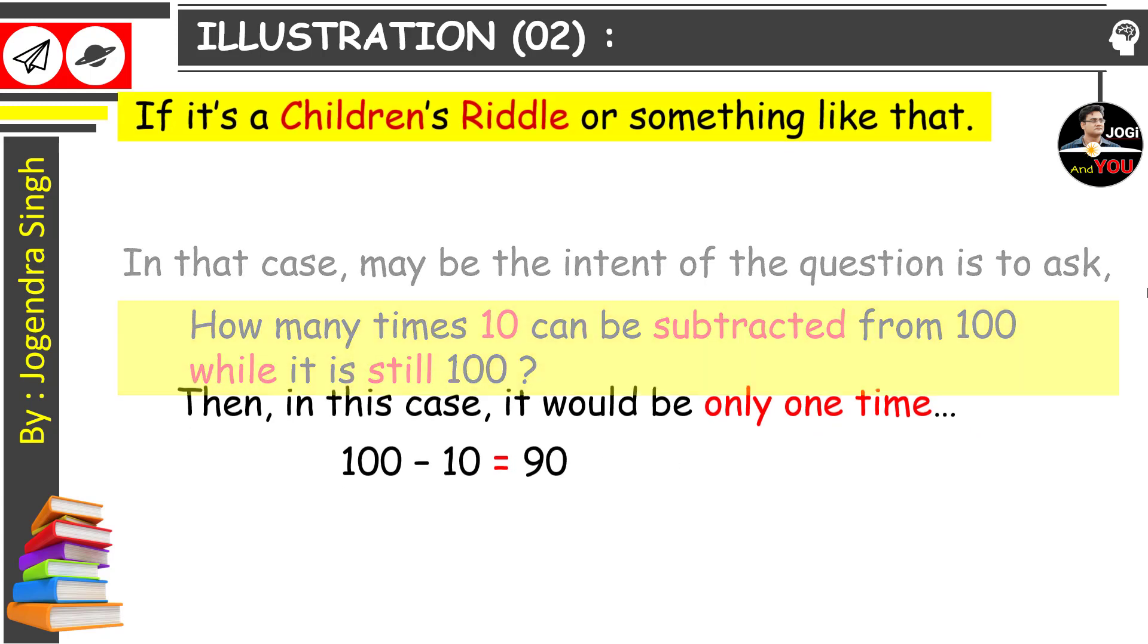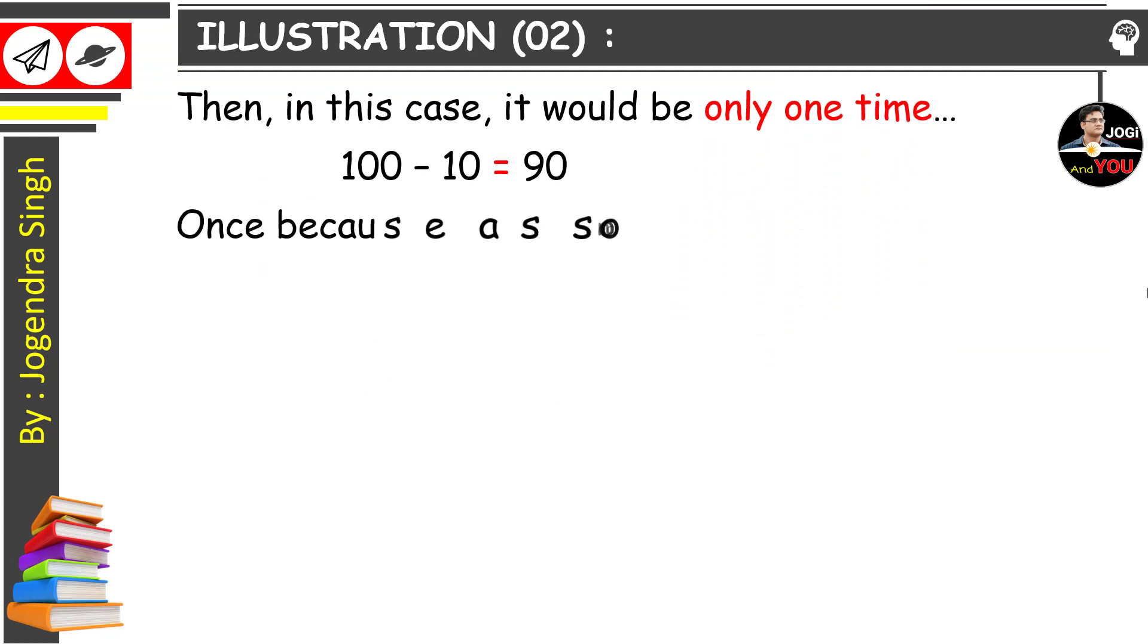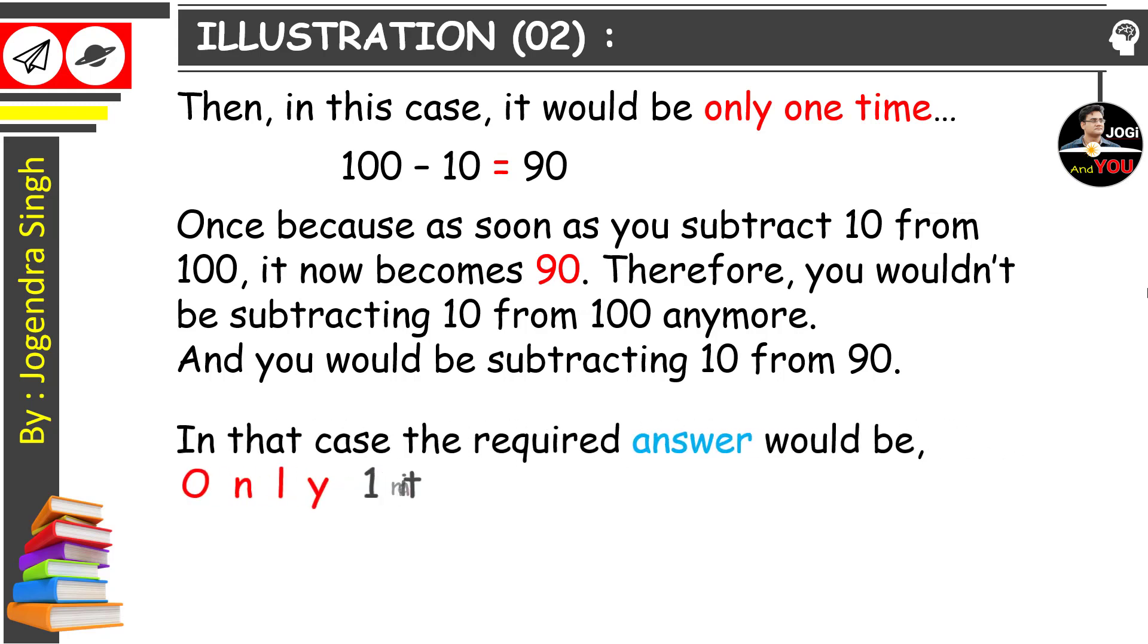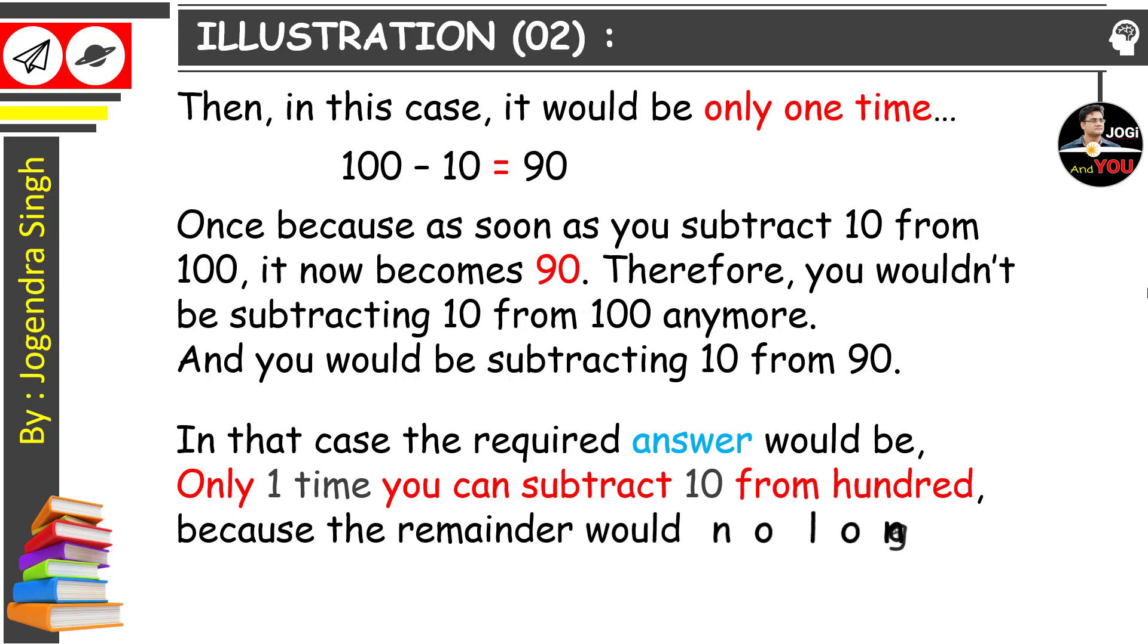100 minus 10 equals 90. And now, once, because as soon as you subtract 10 from 100, it now becomes 90. Therefore you wouldn't be subtracting 10 from 100 anymore, you would be subtracting 10 from 90. In that case, the required answer would be only one time you can subtract 10 from 100, because the remainder would no longer be 100, it would be 90. But the original question is insufficiently specific to the condition something like that.